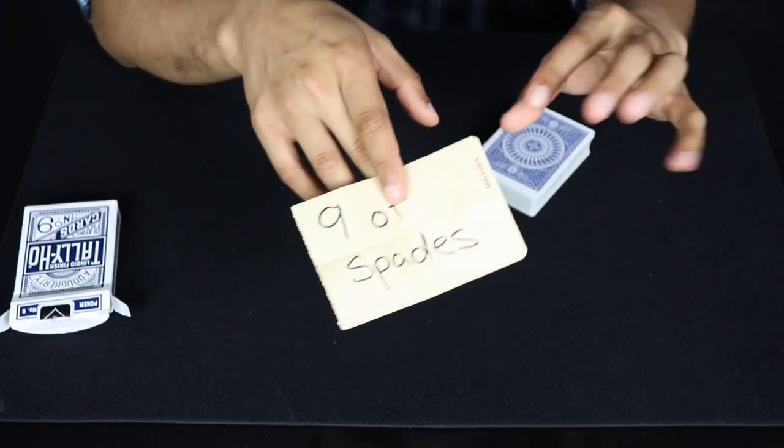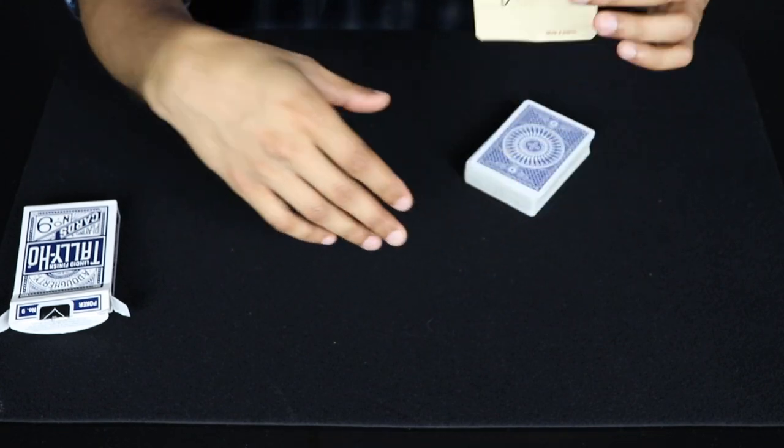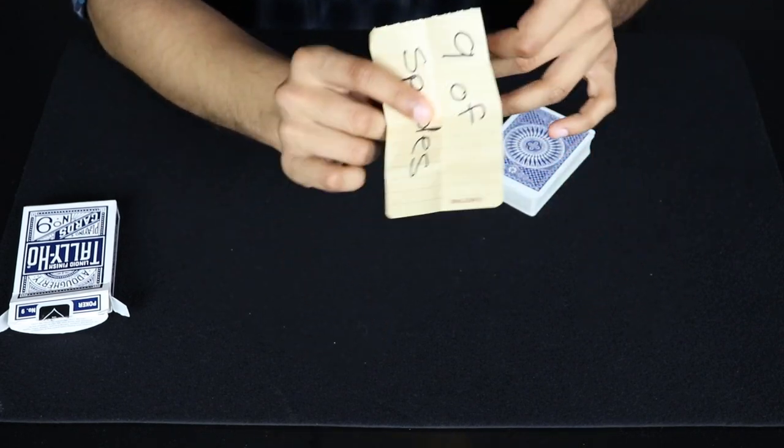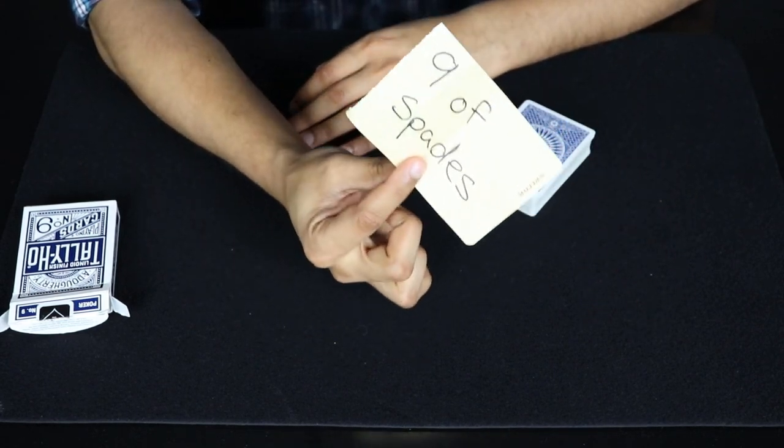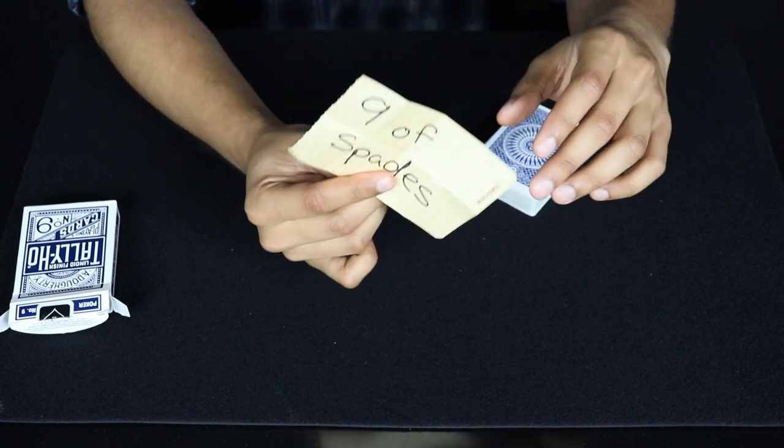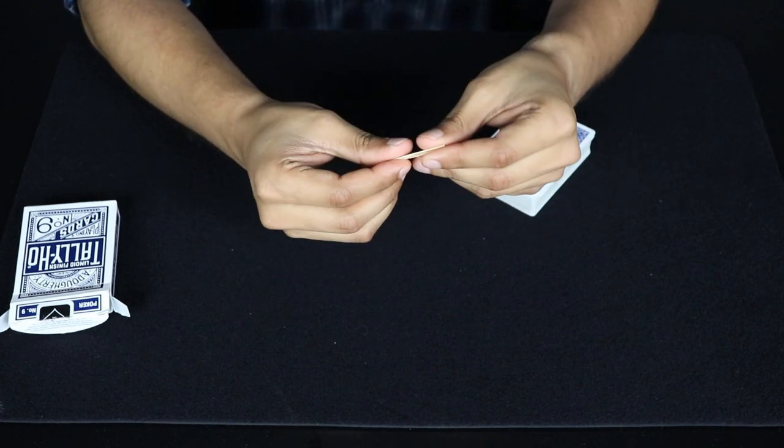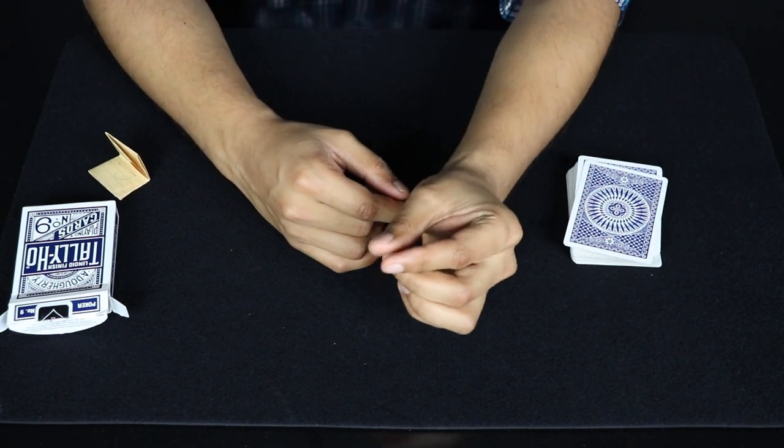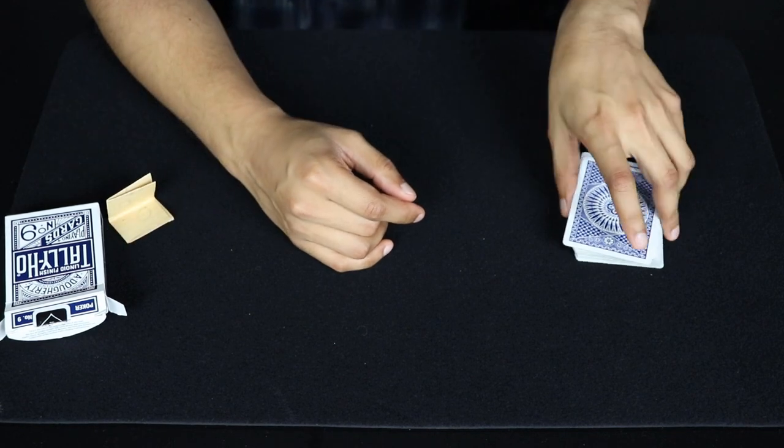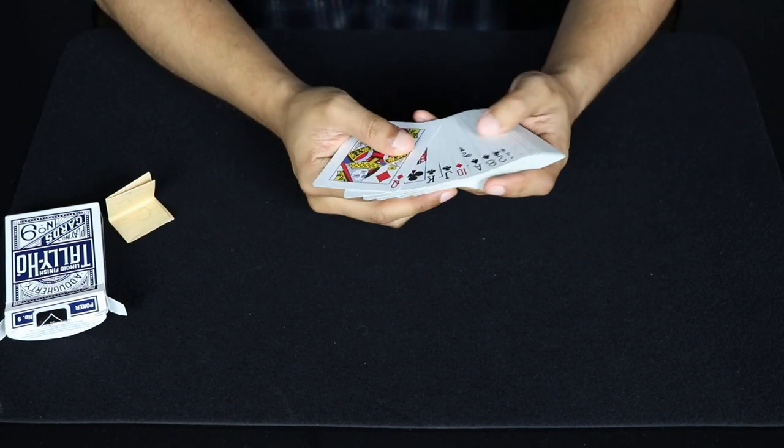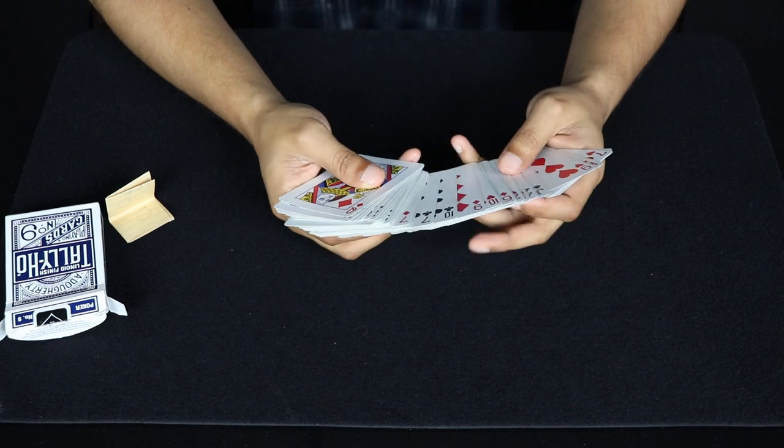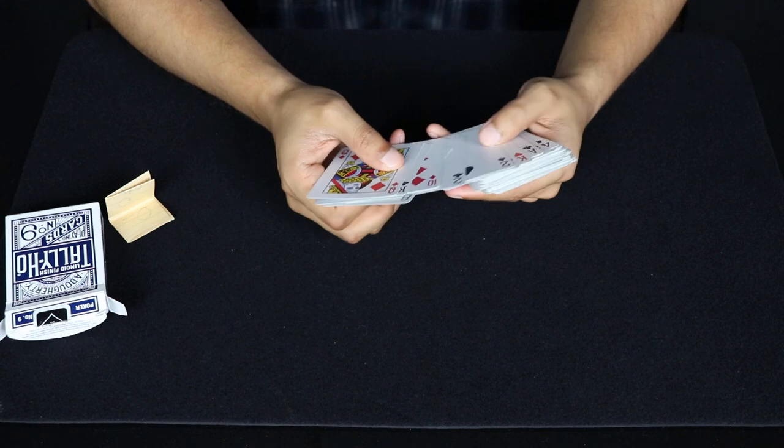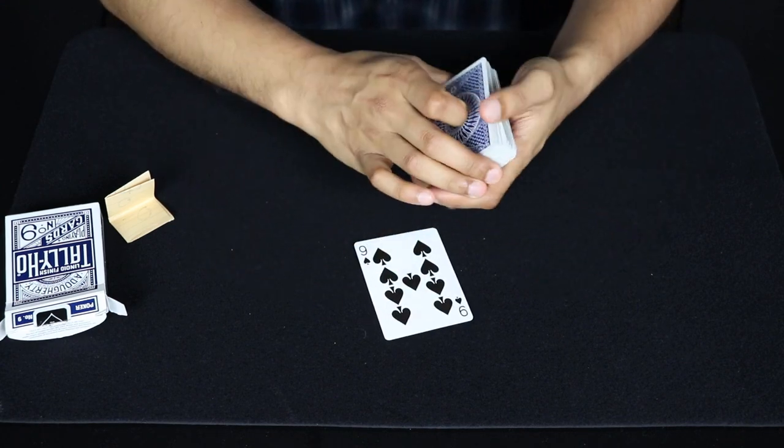So of course I'm going to have one prediction written down, you could pretty much make it whatever you want. You're going to be doing this all before you actually show this to the spectator, so there is some setup involved. In this case I'm using the nine of spades. So I'll take the nine of spades, take this note with the nine of spades written on it, fold it up several times and I'm good to go on this end. Now setting up this deck requires a little more or the same amount of effort. So I'm going to go into the deck, find the nine of spades.